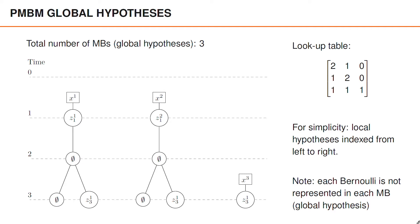Note also one key difference to the MBM filter: each Bernoulli is not represented in each multi-Bernoulli or global hypothesis. This is natural. The Bernoulli that was initiated for the measurement at time step three could not exist if this measurement was instead associated to one of the Bernoullis initiated at time one.